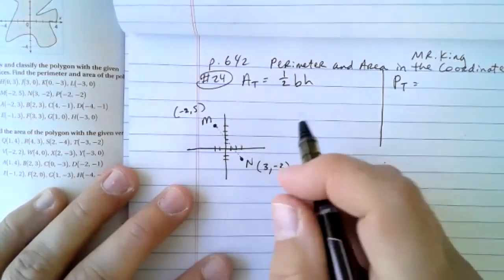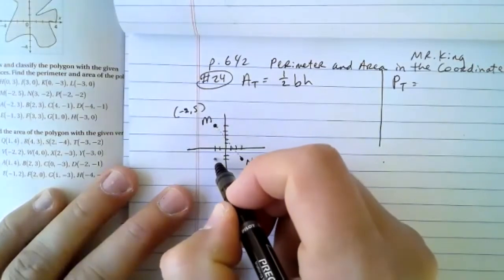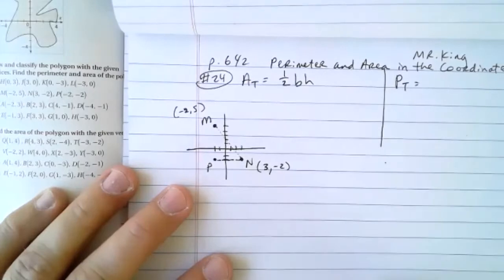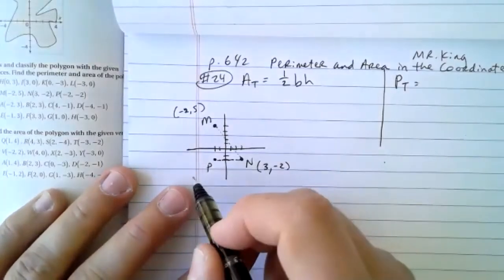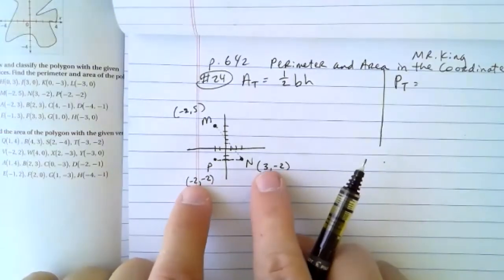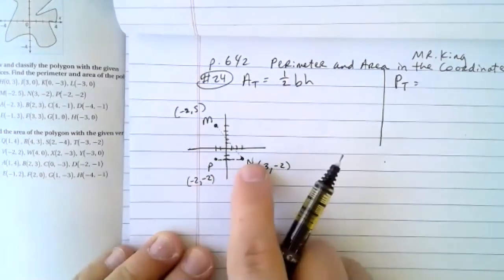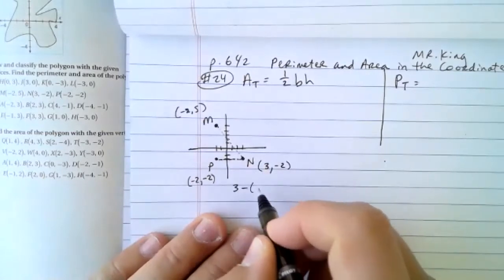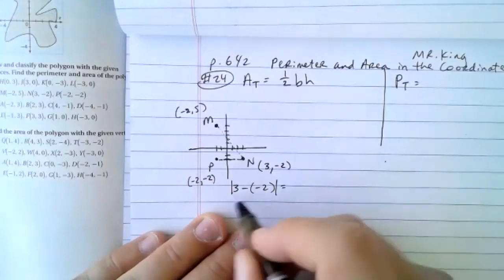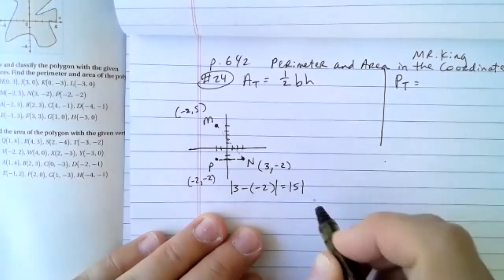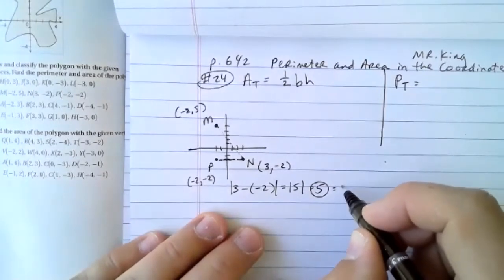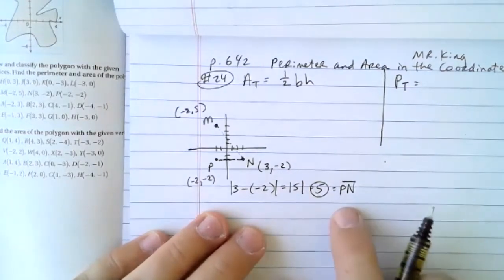The third point of the triangle is at negative two, negative two — straight across. For a straight horizontal or vertical line, you don't need the distance formula; you can just count. The difference between the X values — negative three and negative two — gives us a distance of five using absolute value. So line segment PN equals five.